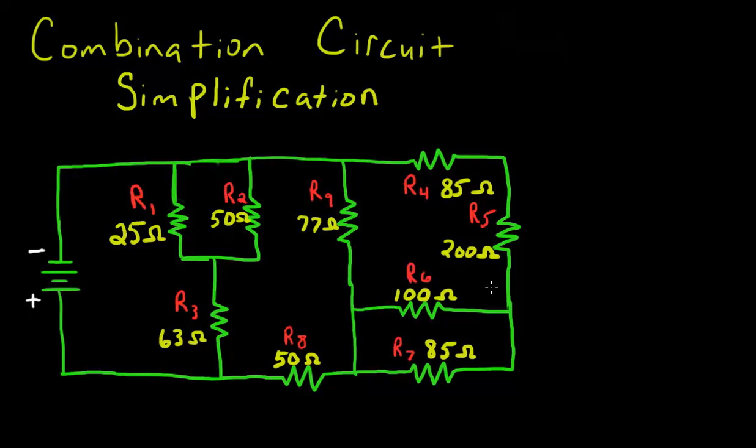The purpose of this video is to simplify a complex combination circuit. In order to do that, we have to simplify the circuit down to a single resistance value, which we call the equivalent resistance, which also happens to be the total resistance for the circuit.